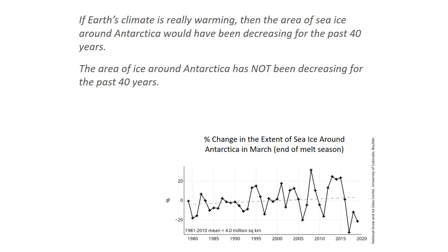Here's an example of an argument that could be made. If Earth's climate is really warming, then the area of sea ice around Antarctica would have been decreasing for the past 40 years. If we look at the graph on the bottom of the screen, we'll see that is not what happened. They've been measuring since 1979, and they have found that the area of ice around Antarctica has not overall been decreasing for the last 40 years. Except for the last three years, it sort of crashed, and we're not quite sure what's going to happen with that. It could be part of a fluctuation, but overall it's been actually slightly increasing.